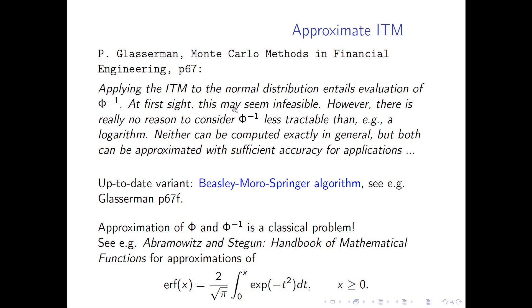Here's a quote from the book of Glasserman, which summarizes a common point of view — or common misperception. At first sight, this may seem infeasible: to approximate the inverse of Φ. But what we are doing all the time is using logarithm, sine, cosine, etc. In particular, the logarithm is also typically implemented as a numerical inverse of the exponential function, and the exponential function is also not implemented in an exact way. So the inverse CDF of the standard normal distribution and the logarithm are somehow the same, at least on a matter level — neither can be computed exactly in general, but both can be approximated with sufficient accuracy for applications.